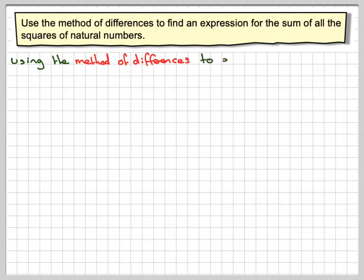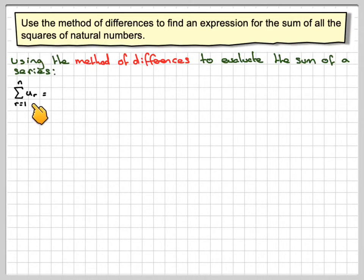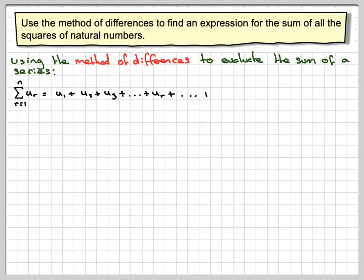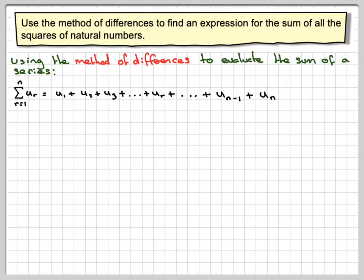So, using the method of differences to evaluate the sum of a series. We want the sum of some series, from r=1 to n. The terms will be u1 plus u2 plus u3, plus the general term u_r, plus u_{n-1}, which is the last but one term, plus the last term, which is u_n.